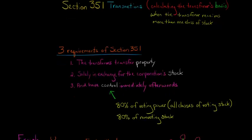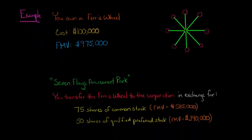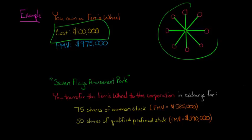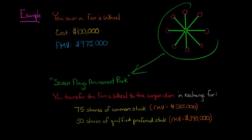I want to give you an example to make it a little easier to understand. Let's say that you own a Ferris wheel with an adjusted basis — or cost, which is the same thing in this case — of $100,000. The fair market value of the Ferris wheel is $975,000. You're going to form a corporation called Seven Flags Amusement Park and transfer the Ferris wheel to it. In exchange, you're going to get not just one class of stock — you're going to get two classes of stock.